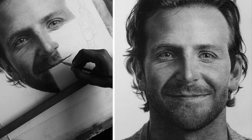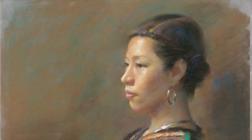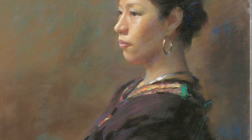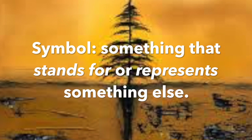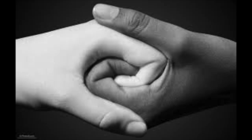Sometimes a portrait looks like the person it's supposed to represent. For example, this looks exactly like Dwight D. Eisenhower. Other times the portrait symbolizes the person — it represents who they are and what their qualities are without looking like their face. For example, this might be a portrait of a very lonely person, while this portrait might be of Martin Luther King.